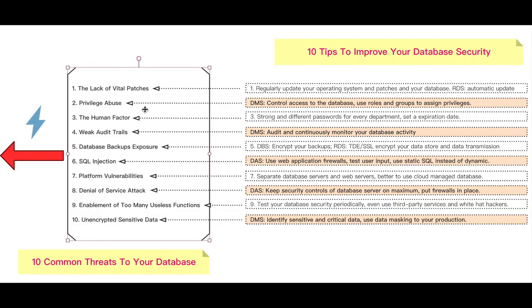You should aim for the least number of people possible to have access to your database. Administrators should have only the bare minimum privileges they need to do their job, and only during periods where they need access. For smaller organizations this might not be practical, but at least permissions should be managed using groups and roles rather than granted directly.